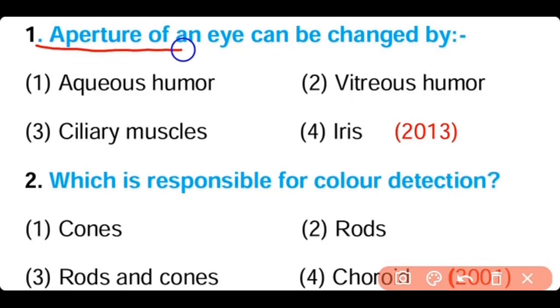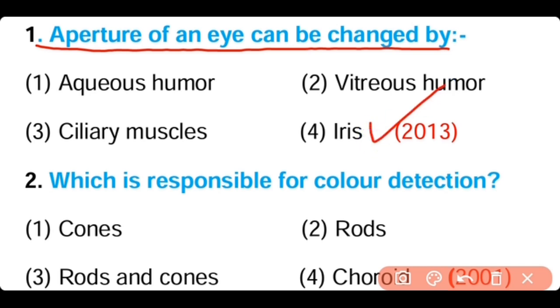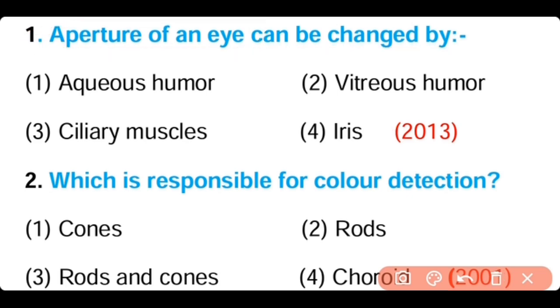Question number one: The aperture of an eye can be changed by (a) aqueous humor, (b) vitreous humor, (c) ciliary muscles, (d) iris. The answer is option four — the aperture of an eye can be changed by using the iris.